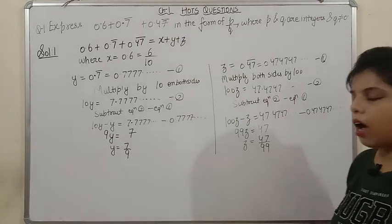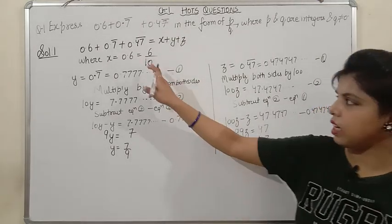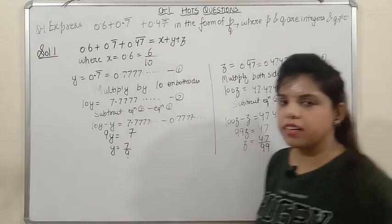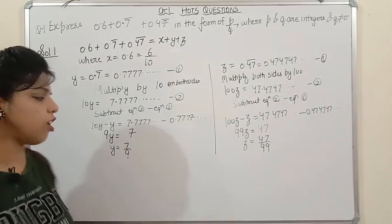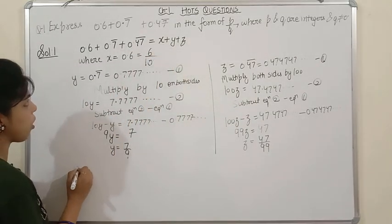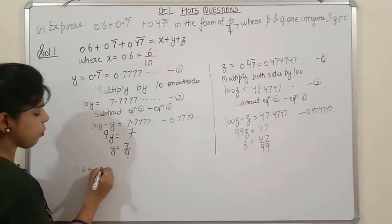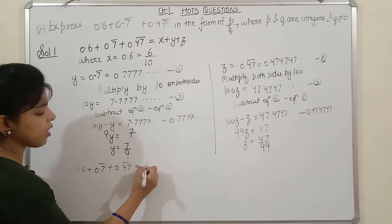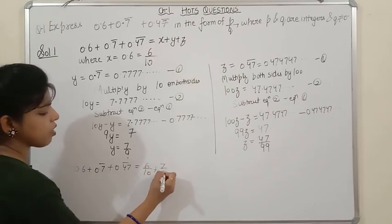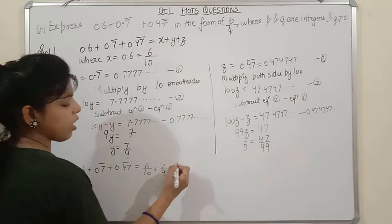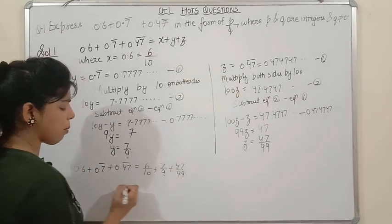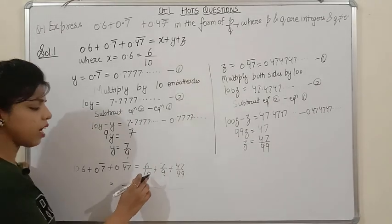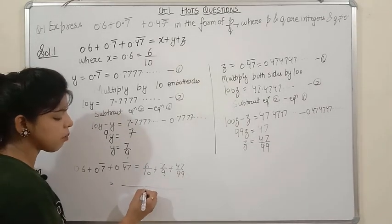So we now have x = 6/10, y = 7/9, and z = 47/99. Substituting: 0.6 + 0.7̄ + 0.47̄ = 6/10 + 7/9 + 47/99. To add these three fractions, we need the LCM of 10, 9, and 99, which is 990.